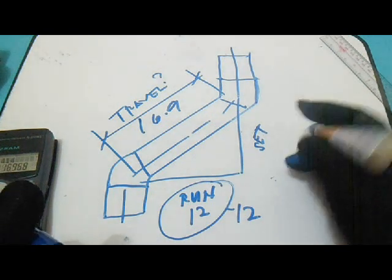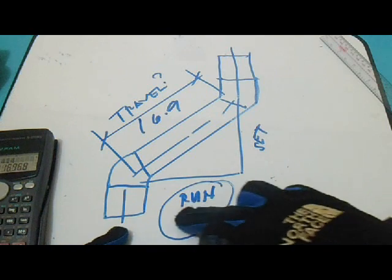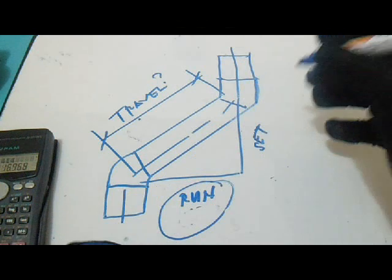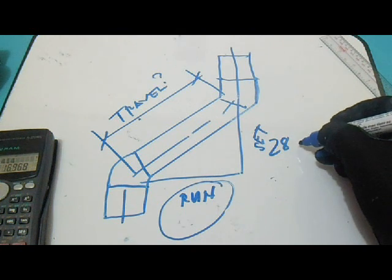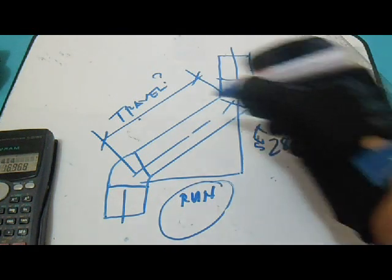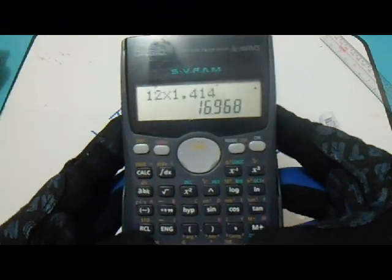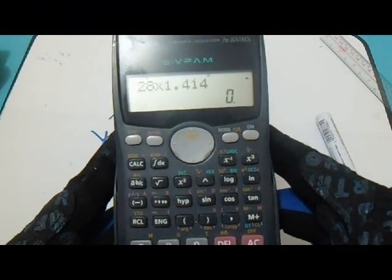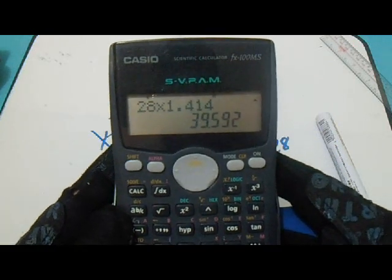And also if the given here is, for example, we have a given for the set of 28, we will use also 1.414 for this to get the travel. Okay, 28 times 1.414. So this is our answer for the travel: 39.5.